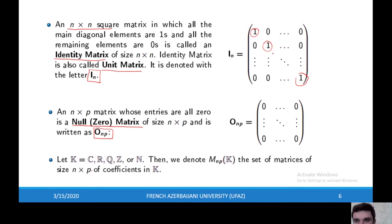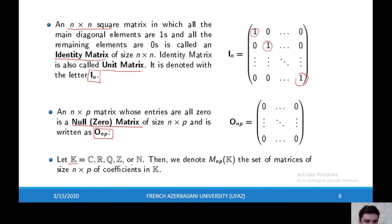All of the coefficients shown here are real numbers, but instead of real numbers you can take any elements of sets, or expressions and symbols. Because of this, I will use the notation K for complex numbers, real numbers, rational numbers, integer numbers, or natural numbers. Then we use this notation for the set of matrices of size n times p, where K shows the set of coefficients.